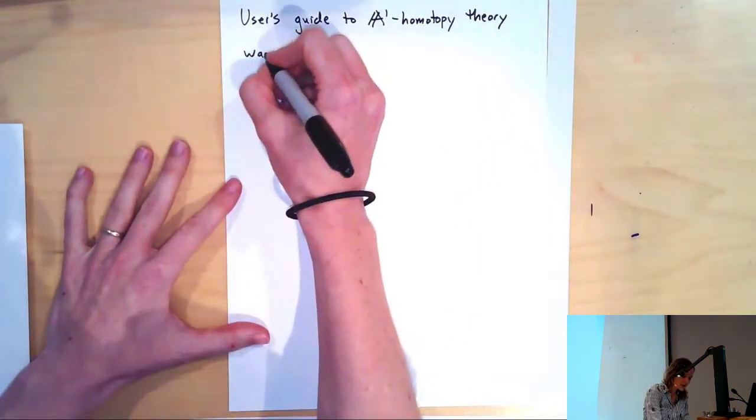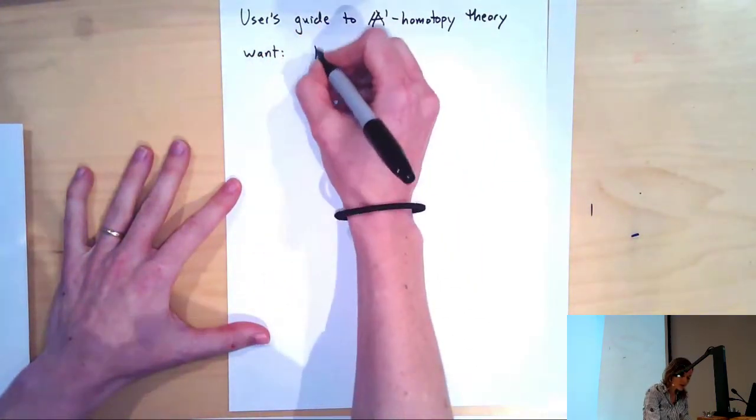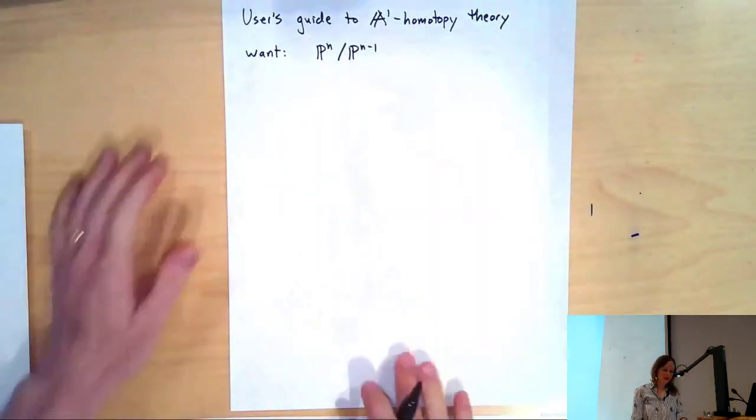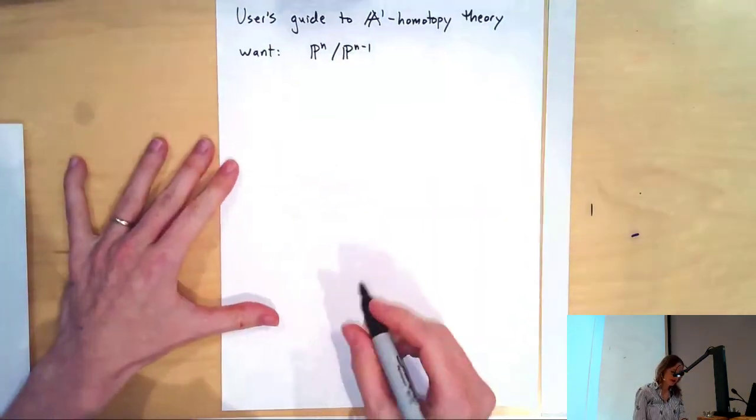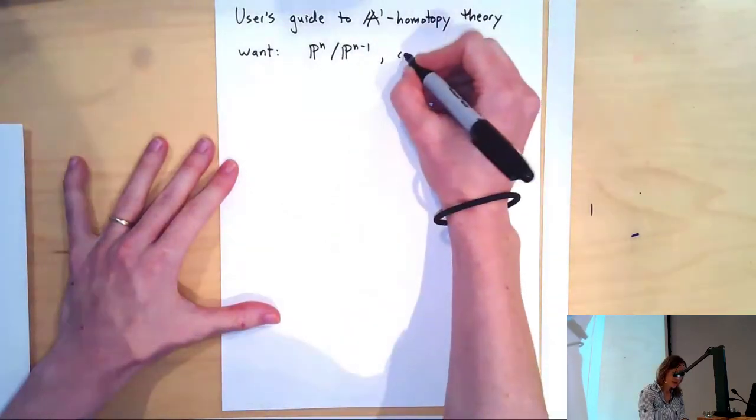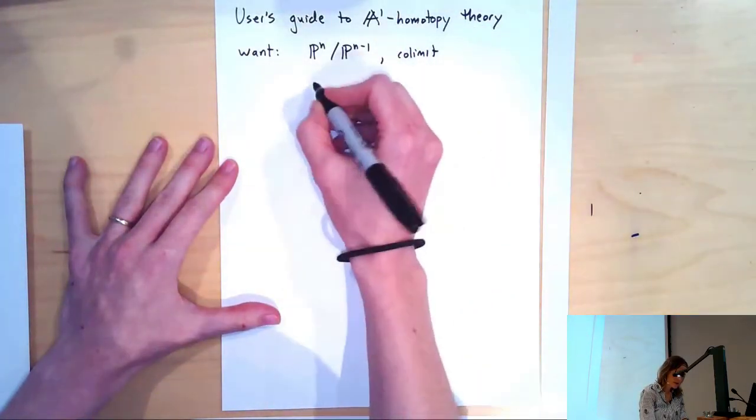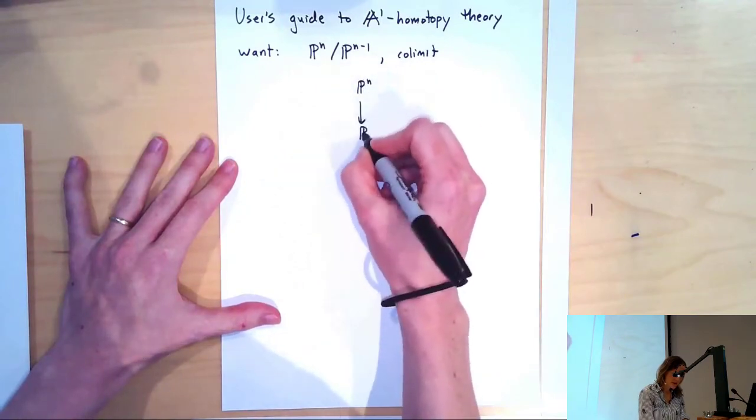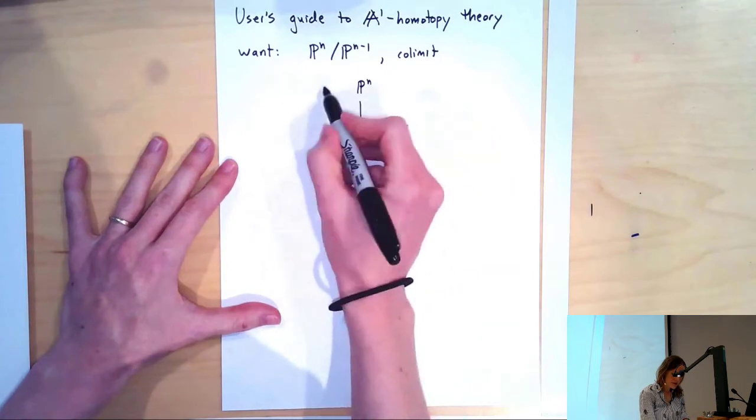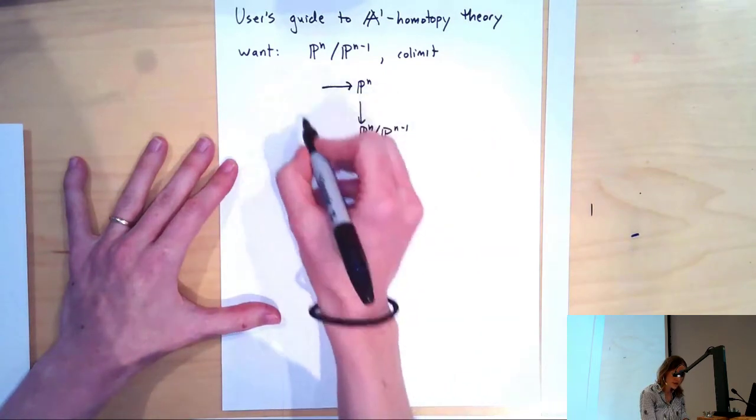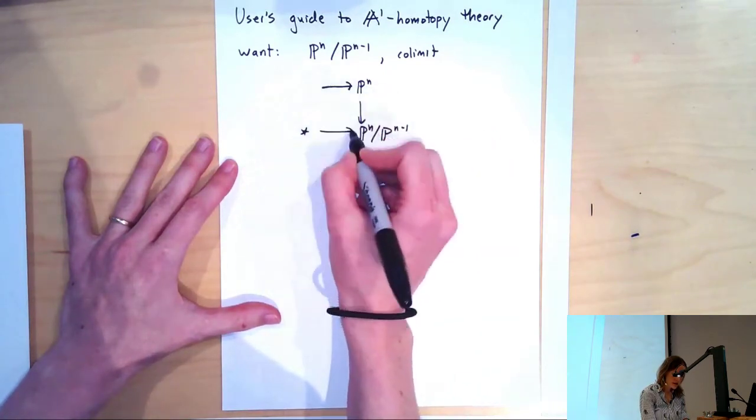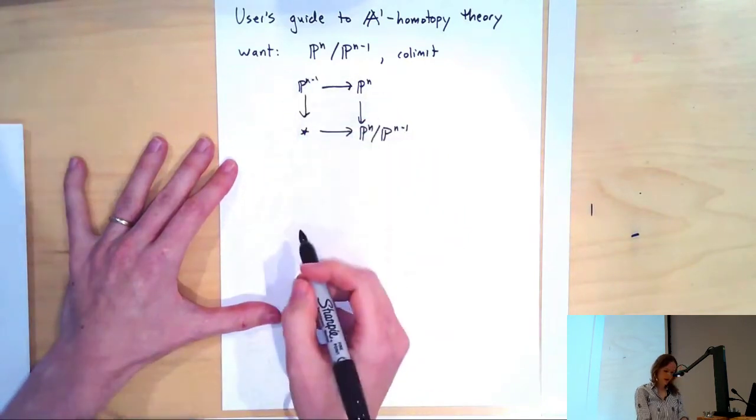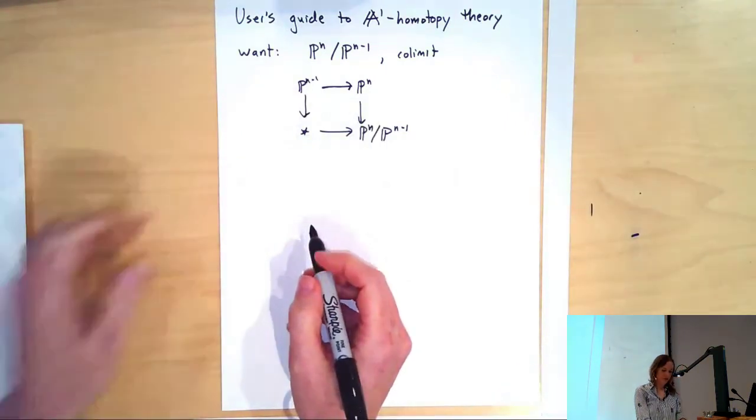Some things we wanted last time is we wanted to be able to form a space P^n over P^(n-1). This is a co-limit. So if we want maps out of P^n over P^(n-1), that's the same as a map out of P^n and a map out of the point which agree when you compose with those maps from P^(n-1).